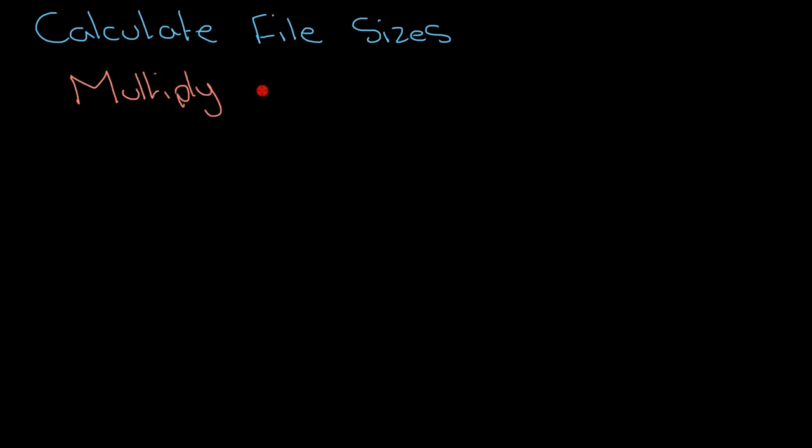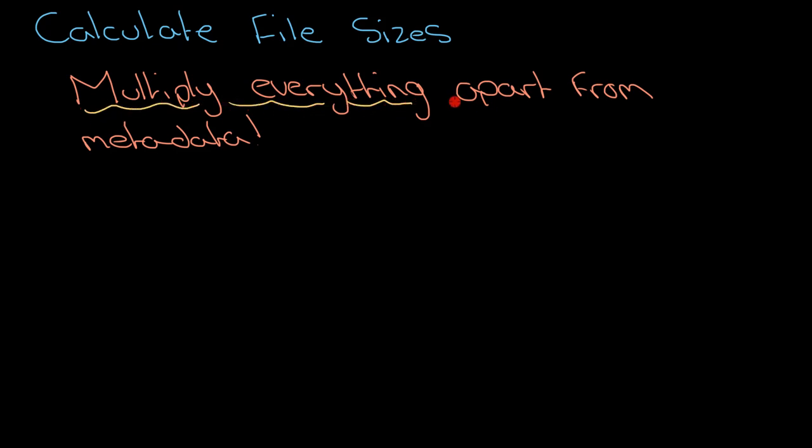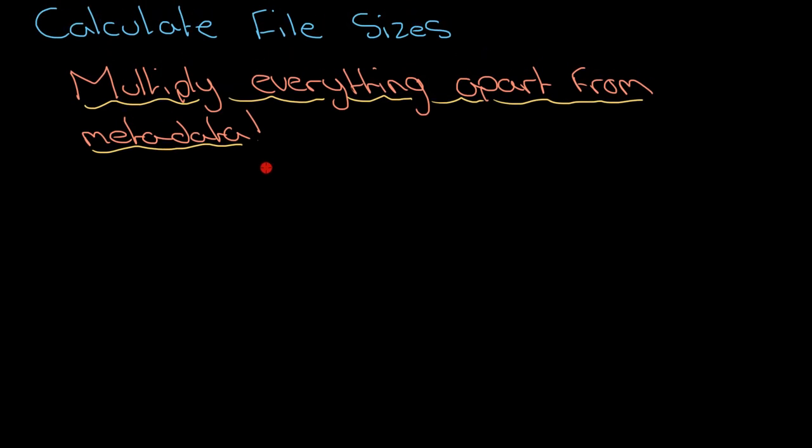No matter what you're doing, there's one big rule you can follow: multiply everything together apart from metadata. If you remember that rule, then you really won't go too wrong. You multiply everything together apart from metadata, which you just add on to the end.